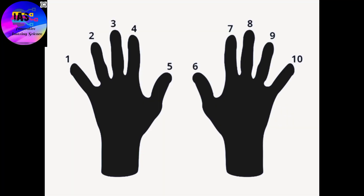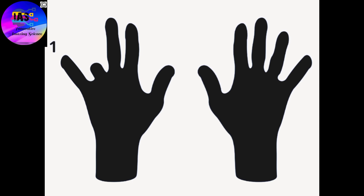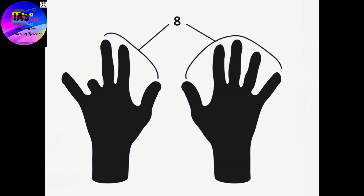Let's see the first trick to remember the table of 9. The first step is to hold your hands up so that the fingers are visible, then assign a number to each finger. To multiply 9 by 2, you need to bend finger number 2 — that's the number you are multiplying by 9. The fingers to the left of the bent finger give you the first digit, which is the tens place.